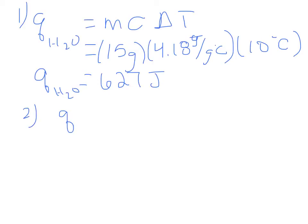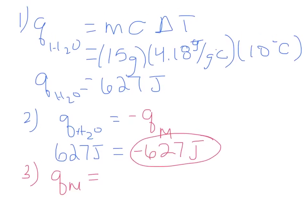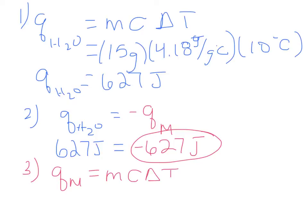Step two: q of water is equal in magnitude but opposite in sign to q of metal. Since the water had an energy of 627 joules, the metal has an energy of negative 627 joules. This value can now be plugged into the metal's equation. In step three, we will use q equals mc delta T to solve for the specific heat of the metal.